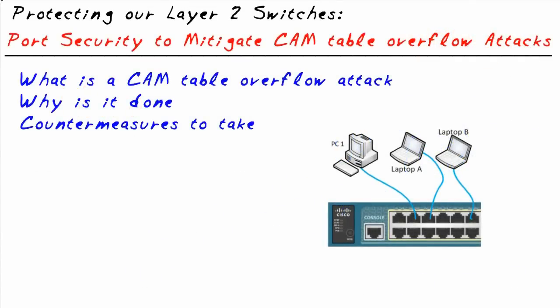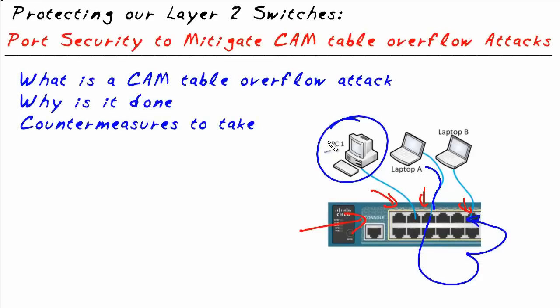To understand a cam table overflow attack, let's give you a brief reminder about how switching operates. The switch looks at every frame that enters the network and memorizes the source MAC addresses, so that if a frame comes in from laptop A and needs to go to laptop B, the switch forwards it right to that port. All other ports don't see those frames. If an eavesdropper wants to see every single frame, how can he pull that off?